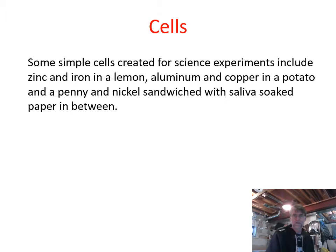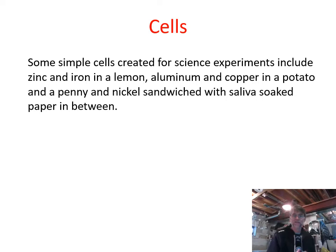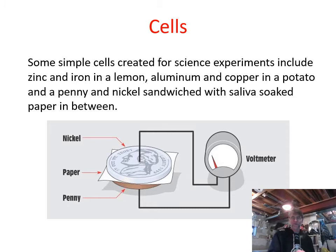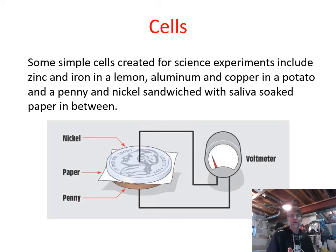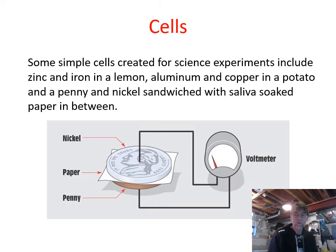Some simple cells created from science experiments include zinc and iron in a lemon, aluminum and copper in a potato, and a penny and nickel sandwiched with saliva-soaked paper in between. This is a very simple little cell: a copper and a nickel with paper between them. If the paper is dry it doesn't assist electron transfer, which is why saliva is used — it's full of salt and assists electron transfer between the two dissimilar metals. A sensitive voltmeter would recognize a potential in that simple cell.